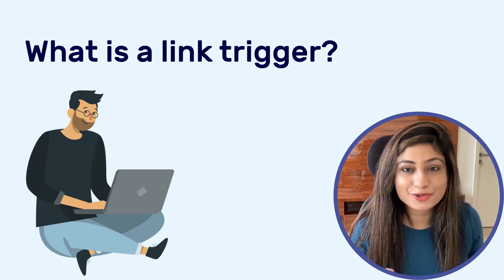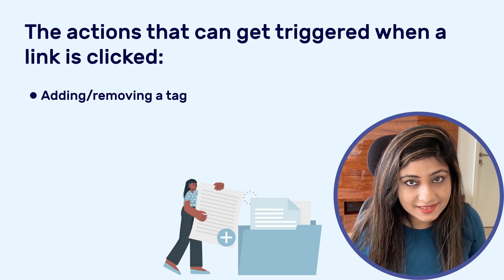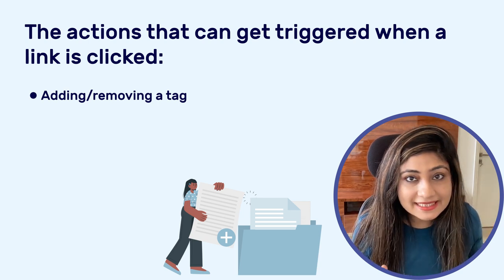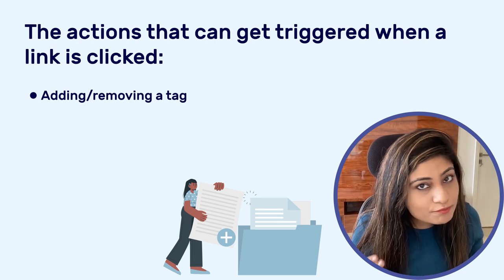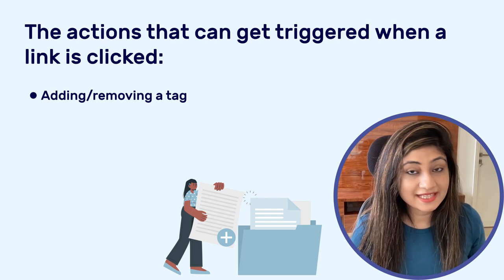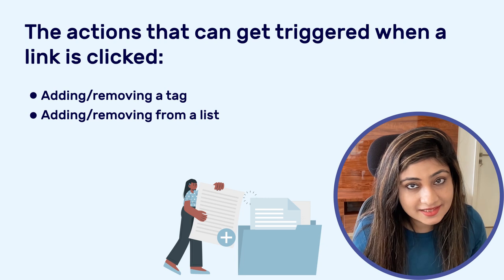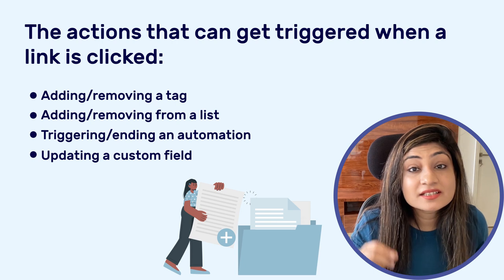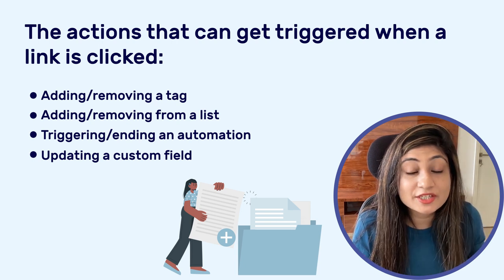What type of action? You can add or remove a tag on a contact. Just by clicking the link, a tag which you define can get added or removed from the contact. It can be added or removed from a specified list. You can end an automation and you can update custom fields. That's just a small snapshot of what you can do — there is a lot more to it.